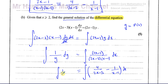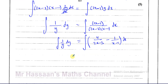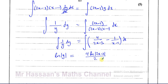Integrating the left side, 1/y with respect to y gives ln|y|. On the right, each term is of the form where the numerator is a constant multiple of the derivative of the denominator, so we use the ln technique. We get 4 times ln|2x minus 3| divided by 2, minus 1 times ln|x minus 1|, plus constant of integration C. This simplifies to 2 ln|2x minus 3| minus ln|x minus 1| plus C.